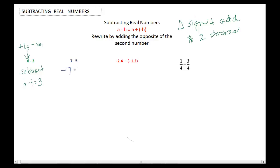Negative 7 plus a negative 5. So making that negative a positive — or minus a plus — is one stroke. And then making that 5 a negative 5 is the second stroke. Let me put that in red. Here's my first stroke. Here's my second stroke. Now we have the same signs, so we just add and assign the sign. So negative 7 plus a negative 5 is equal to a negative 12.